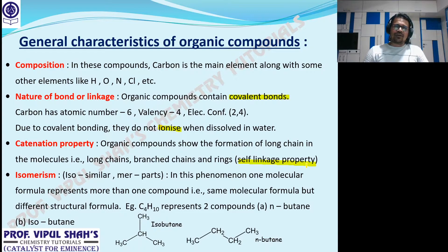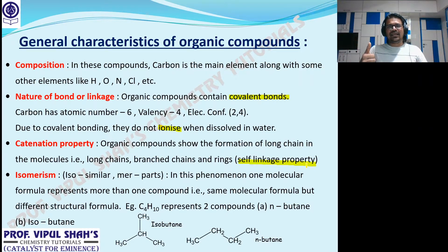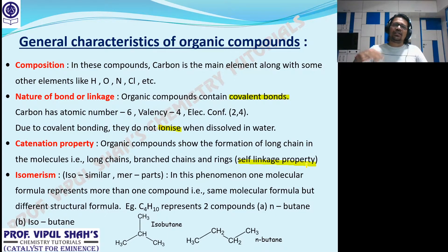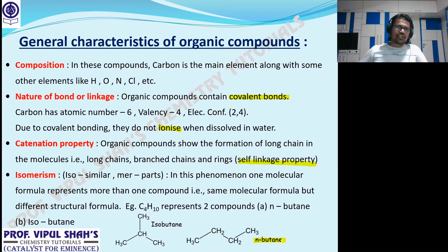We know the general formula for alkanes is CₙH₂ₙ₊₂. If we put N=4, it becomes C₄H₁₀ — that's butane. The ten alkanes correspond to the ten fingers: methane, ethane, propane, butane, pentane, hexane, heptane, octane, nonane, decane. C₄H₁₀ can be written in two ways. One is n-butane, where the small 'n' stands for 'normal' — meaning a continuous chain without branching. The second is isobutane.